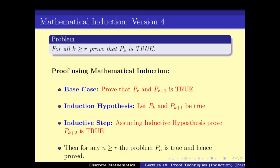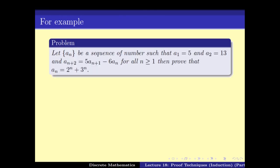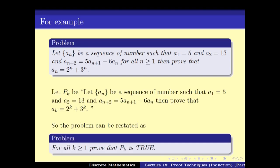Let's see how to apply this version to a specific problem. Consider a sequence of numbers where A1 = 5, A2 = 13, and for all n greater than or equal to 1, An+2 = 5·An+1 − 6·An. We want to prove that An = 2^n + 3^n. Let Pk be the statement that Ak = 2^k + 3^k. We have to prove that for all k greater than or equal to 1, Pk is true.